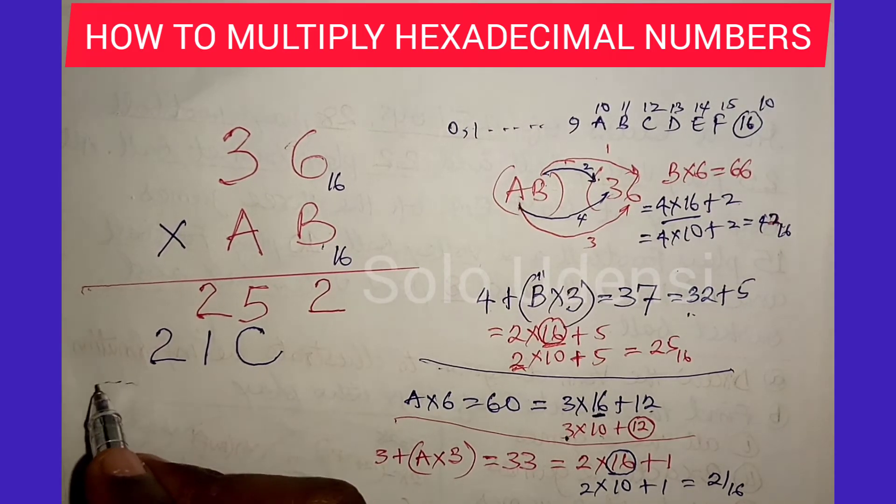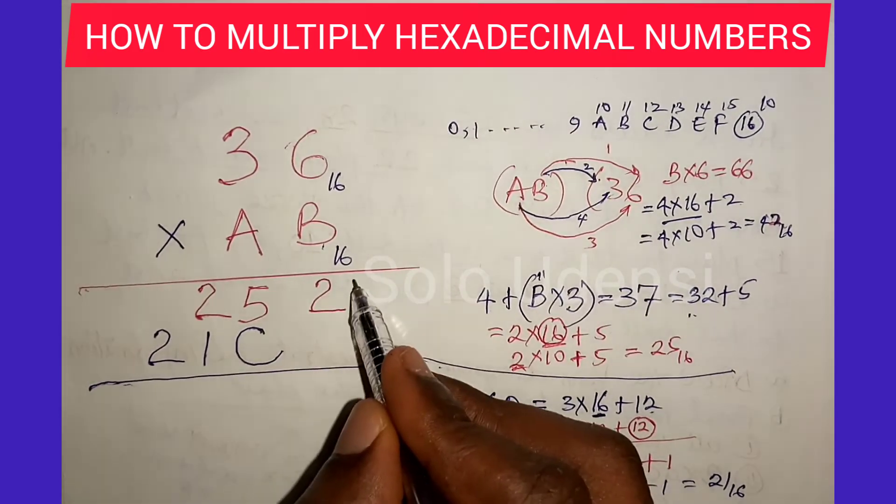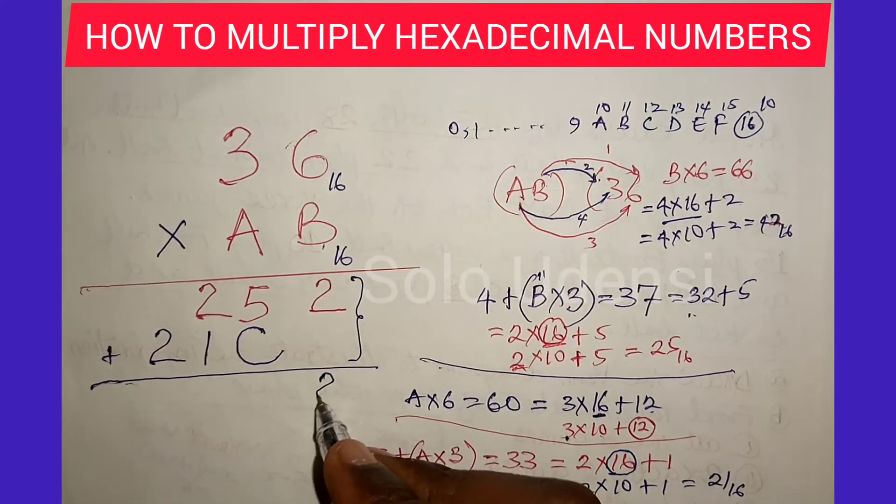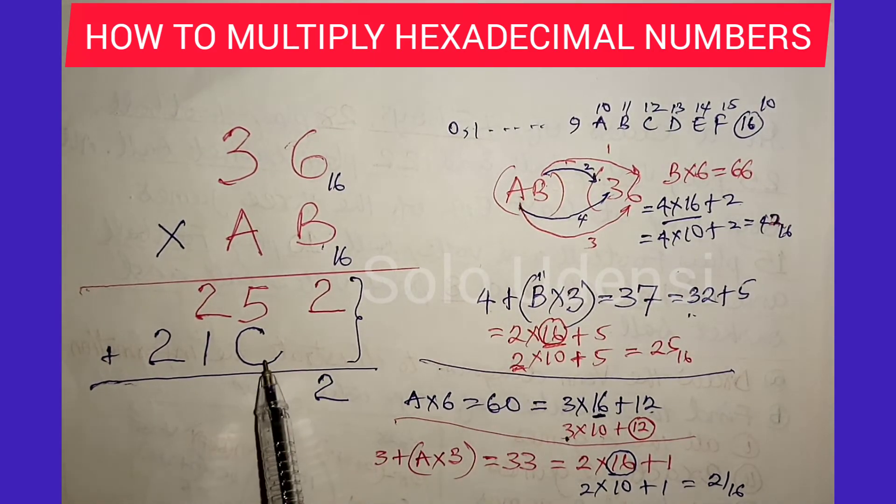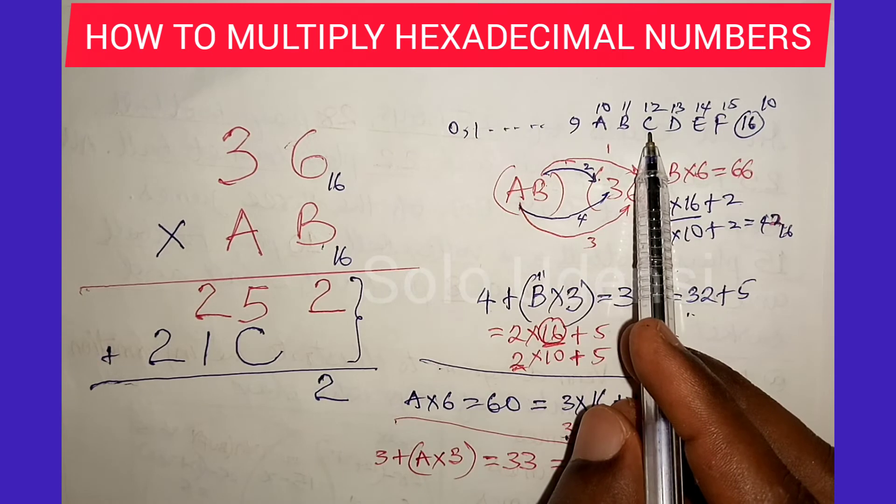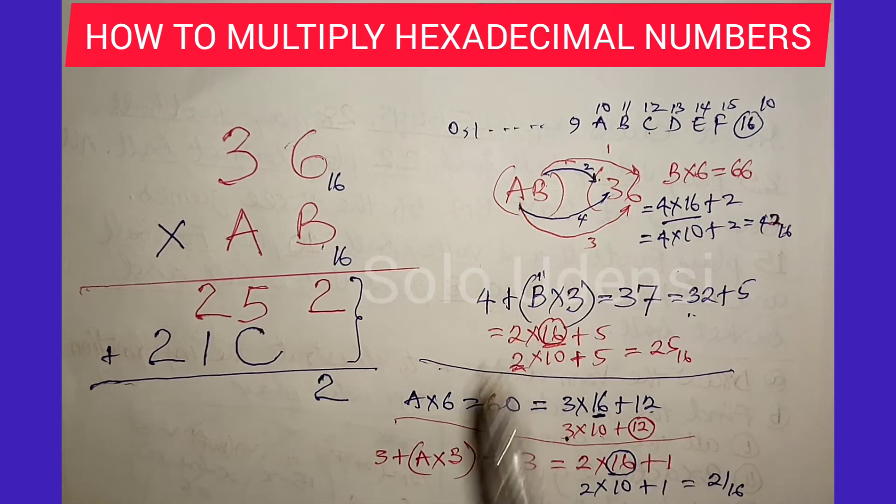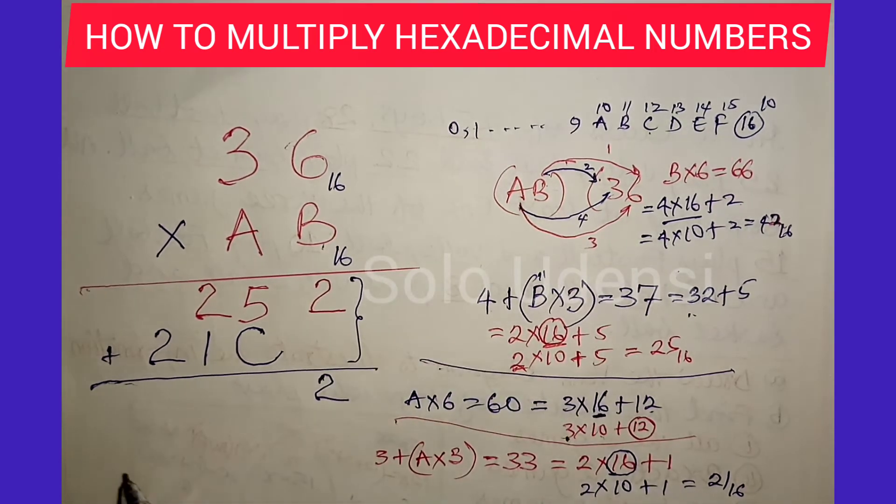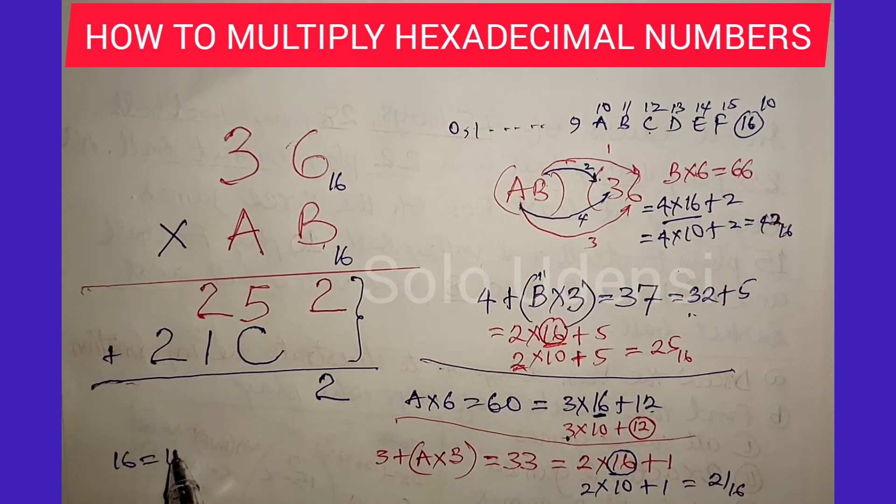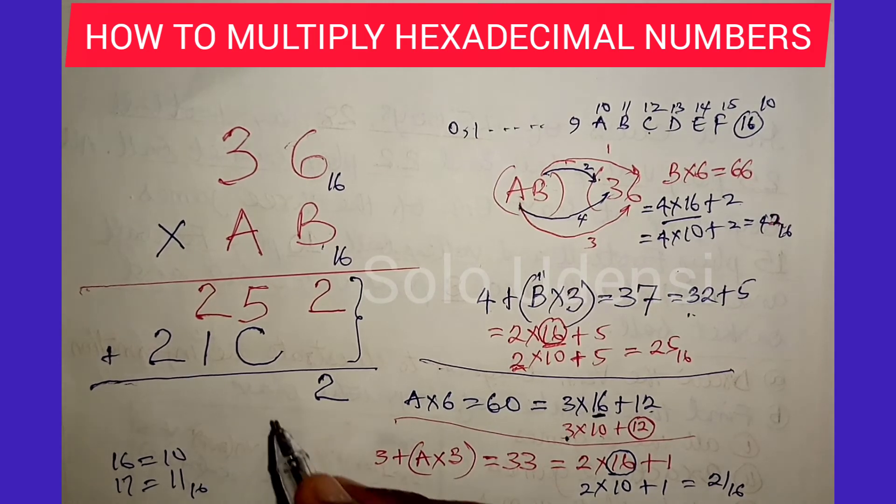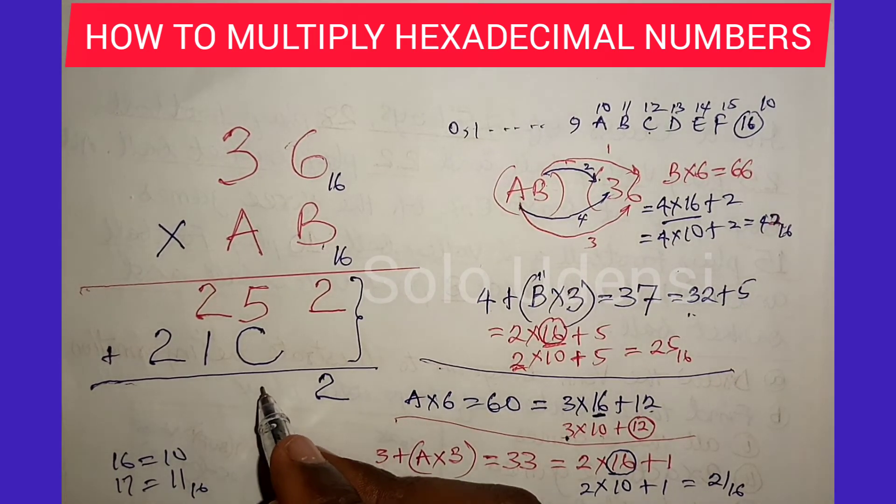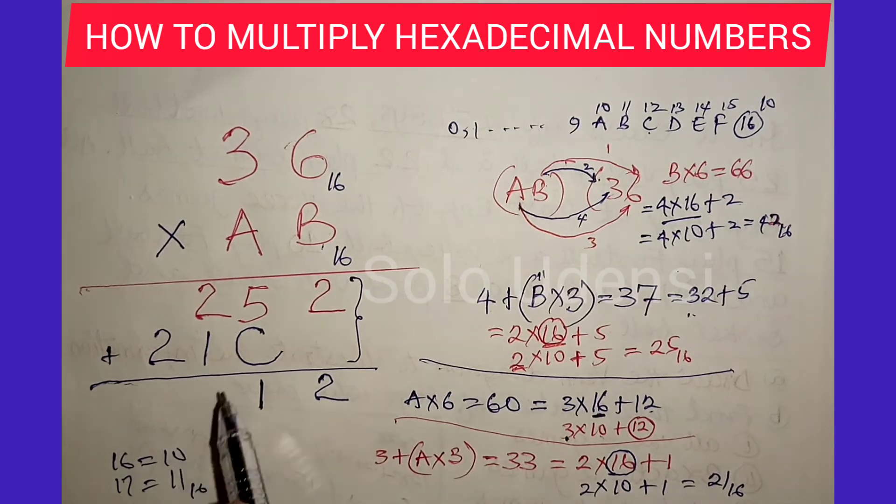Now, then we add. You have 2. So remember, C is equal to 12. 12 plus 5 is 17. So 17 is 11 in base 16. Remember, 16 is equal to 10 in base 16. So the 17th one is 11 in base 16. So you write 1 and carry 1. So you put it here. It's 3 plus 1, 4. You write 4.